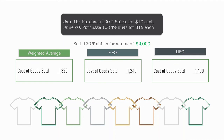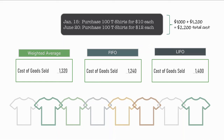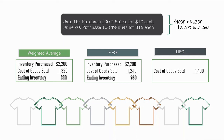Using the same math, we can also determine the residual inventory on the balance sheet at the end of the year — what we haven't sold. We paid $2,200 total for all inventory. Under weighted average, what we sold was $1,320, so ending inventory on the balance sheet is $880. Under the FIFO method, since the cost of goods sold was less, ending inventory is $960. And under the LIFO method, ending inventory is $800.